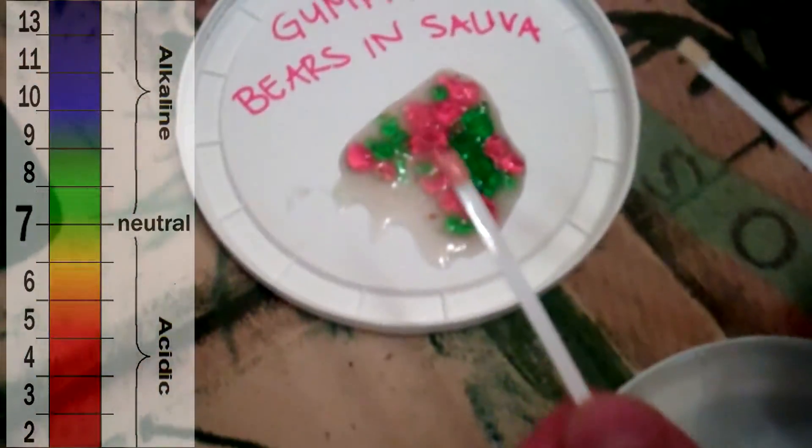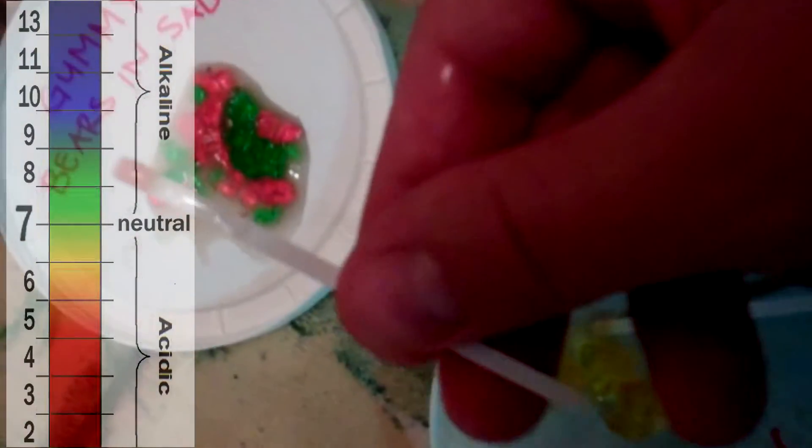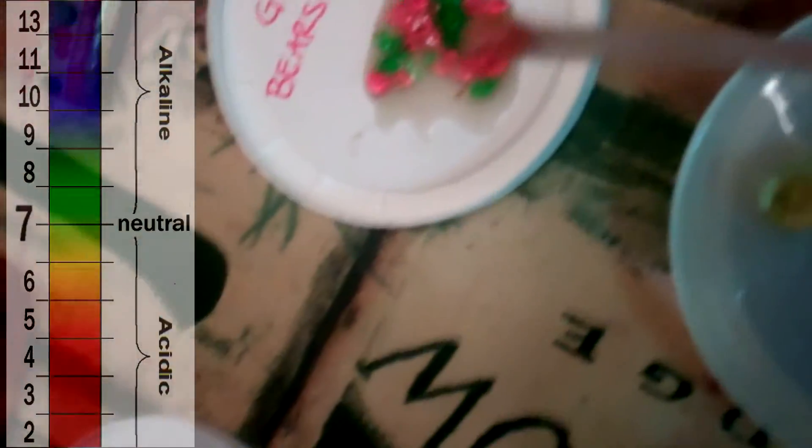This is gummy bears in saliva. And you can see, maybe you can see, that the gummy bears in the saliva. See how bright that is? On our scale, that's a 6.0. Now we did this with a saliva. The saliva before we tested was this green. And we did it with the gummy bears.